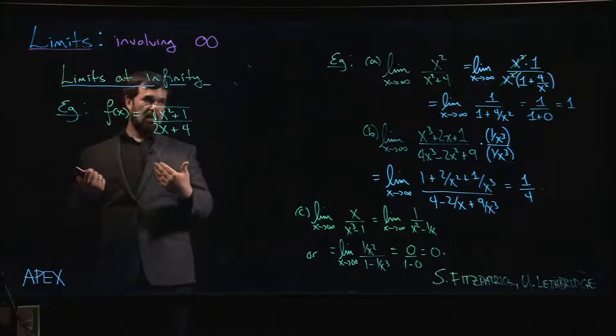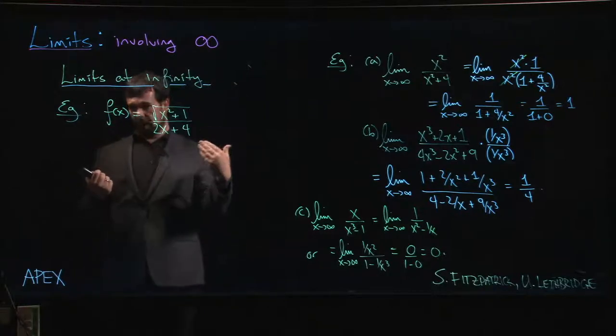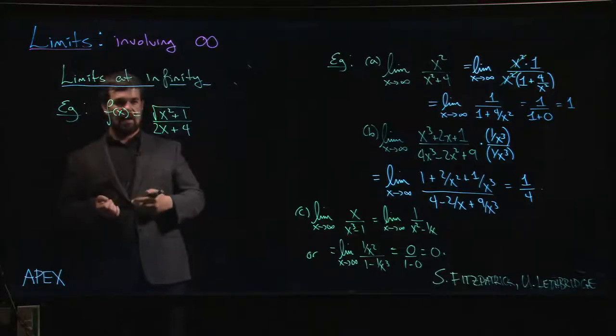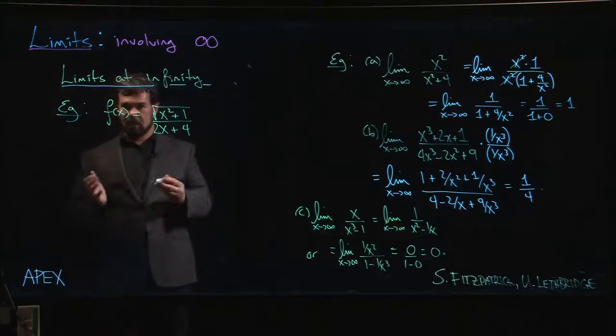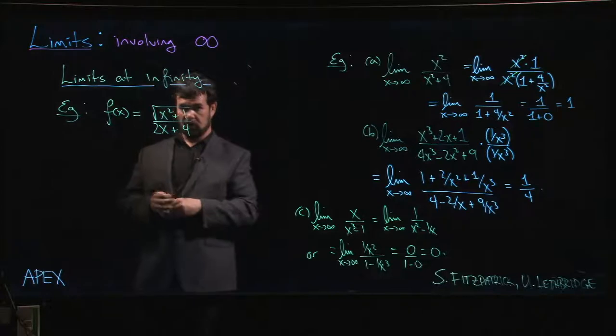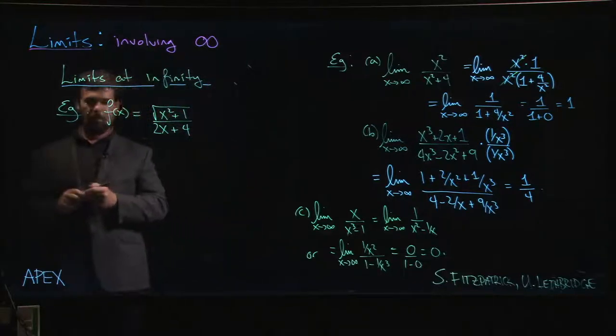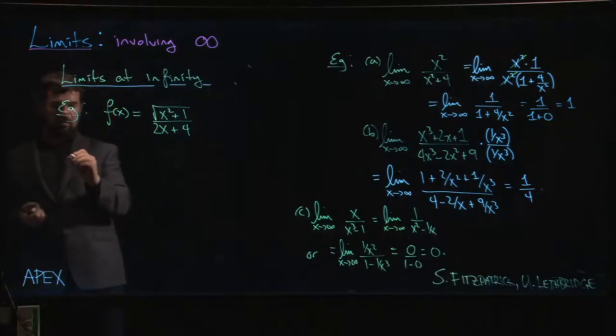So for x large and positive, this thing should have a positive value. For x large and negative, it's going to have a negative value. That means that we don't expect the same limit at plus infinity as we do as we approach minus infinity. And if you're not careful, it's really easy to miss the fact that those two limits should be different.